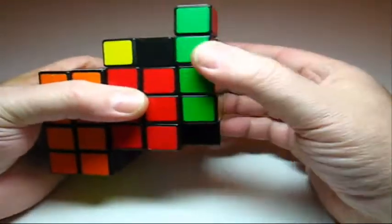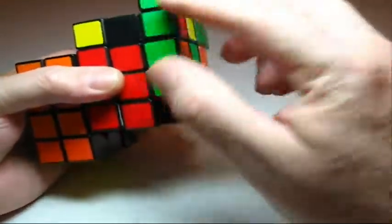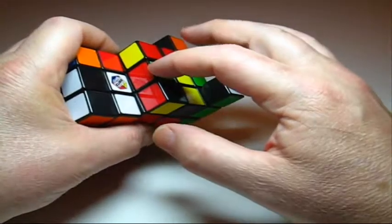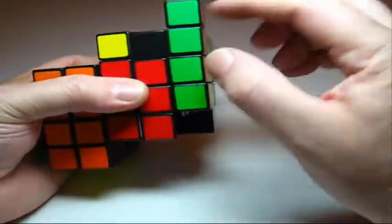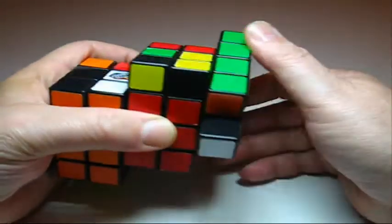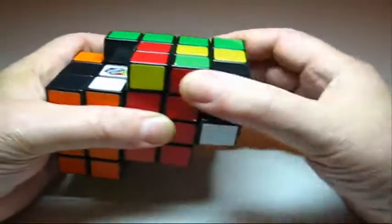And then you've got to put the corners in. Now you look green red, green red, it's there. So you try to get the same color on top. We'll get the same color on top, green green.